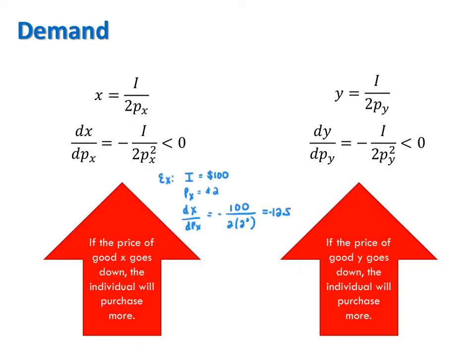For example, say that income is 100 and the price of x is 2. dx/dpx is therefore negative 12.5. This means we predict that if the price of x goes down by a dollar, the quantity of x demanded will go up by 12.5 units. Or if the price of x goes up by a dollar, the quantity demanded of x will go down by 12.5 units.